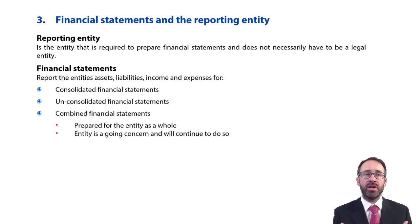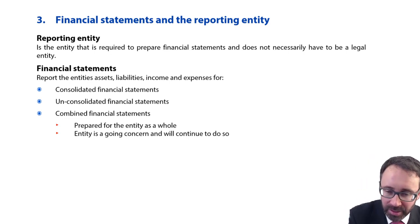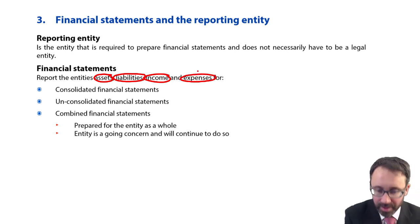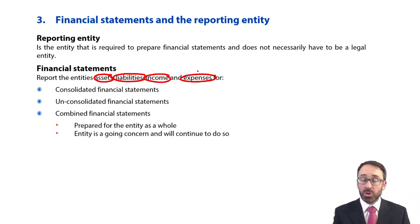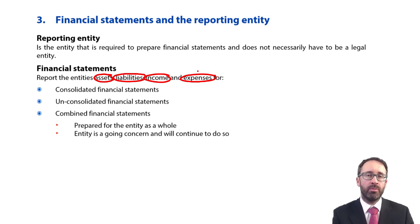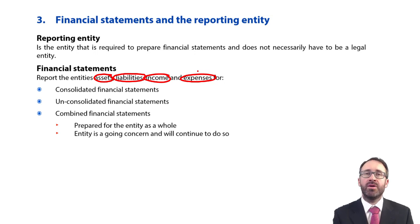So what should those financial statements include? Based upon what you've seen in financial accounting, the reporting entity reports the entity's assets, liabilities, income, and expenses. On the statement of financial position we see assets and liabilities, and assets less liabilities gives you equity. So the framework is giving you guidance as to what you should be reporting on the SFP. And in the statement of profit or loss it's giving you guidance as to the reporting of your income and your expenses.